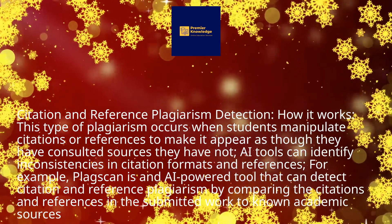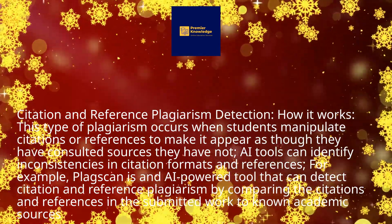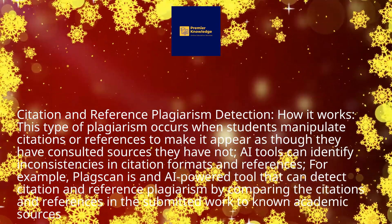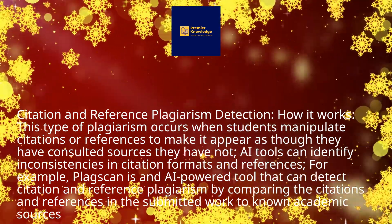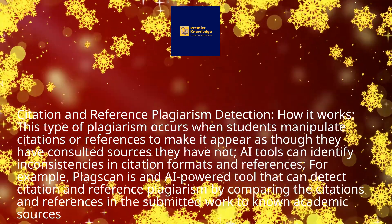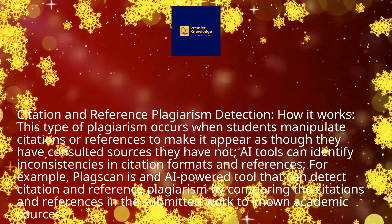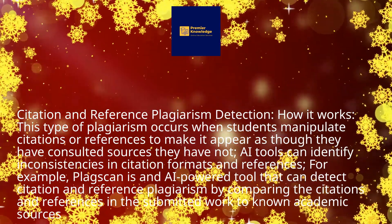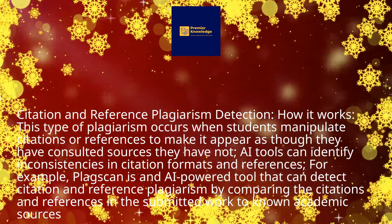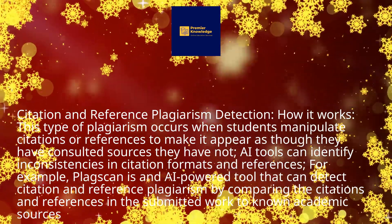Citation and reference plagiarism detection. This type of plagiarism occurs when students manipulate citations or references to make it appear as though they have consulted sources they have not. AI tools can identify inconsistencies in citation formats and references. For example, Plagscan is an AI-powered tool that can detect citation and reference plagiarism by comparing citations and references in submitted work to known academic sources.